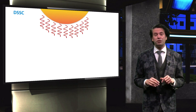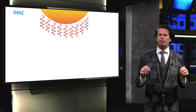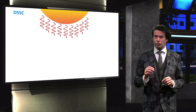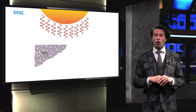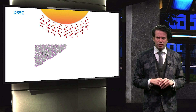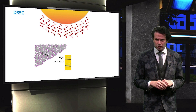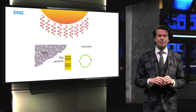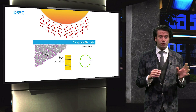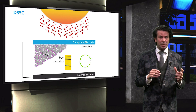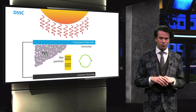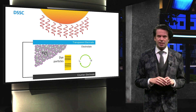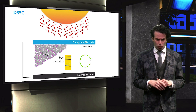The conventional dye-sensitized solar cell is a photoelectrochemical system. It consists of titanium oxide nanoparticles, dye particles, an electrolyte, a transparent front electrode, and a platinum back contact. In this illustration, the dye-sensitized solar cell is schematically shown.